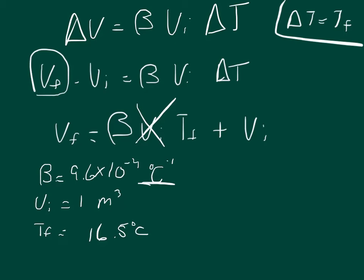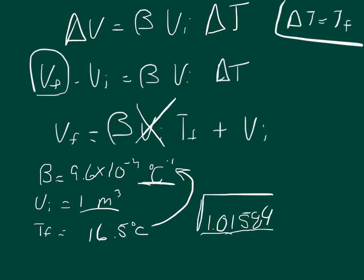We multiply 16.5 times the volume expansion coefficient beta and add 1 to the answer. The final temperature times the volume expansion coefficient equals 0.01584. Adding the initial volume of 1, the final volume equals 1.01584 cubic meters. One important note: even though the initial volume of 1 is an identity property numerically, the units on the volume do come into play — otherwise the units would cancel and we'd be left with a unitless number, which can't be added to a number with units.